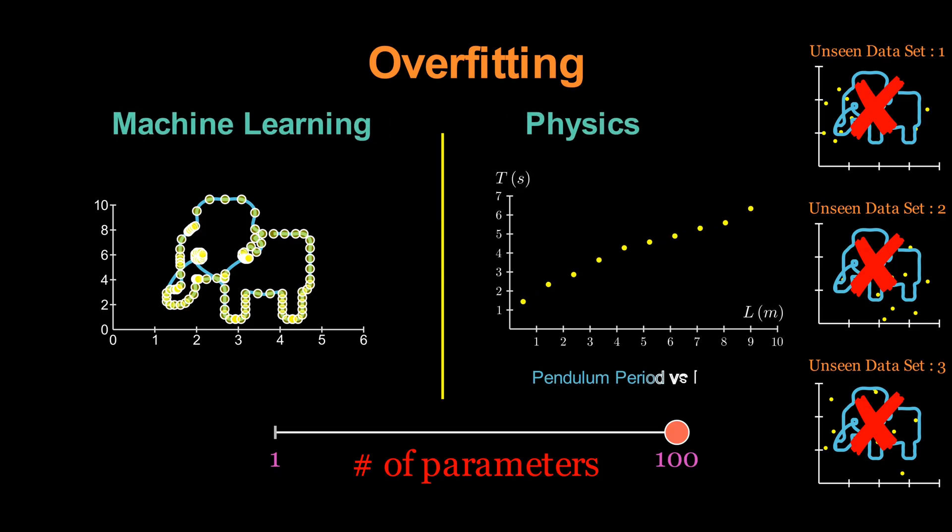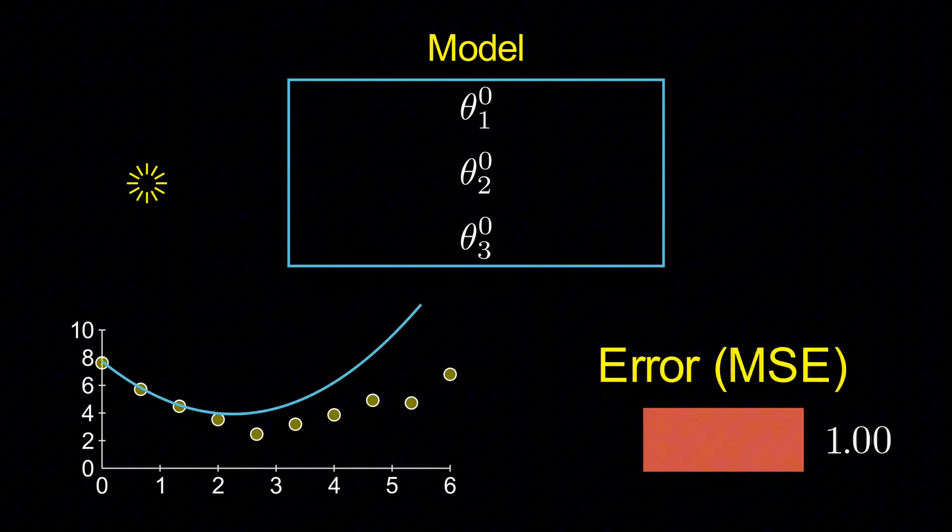Physicists, too, wrestle with models' free parameters all the time. Every scientific model, whether in physics or machine learning, comes with unknown parameters that must be determined by data.